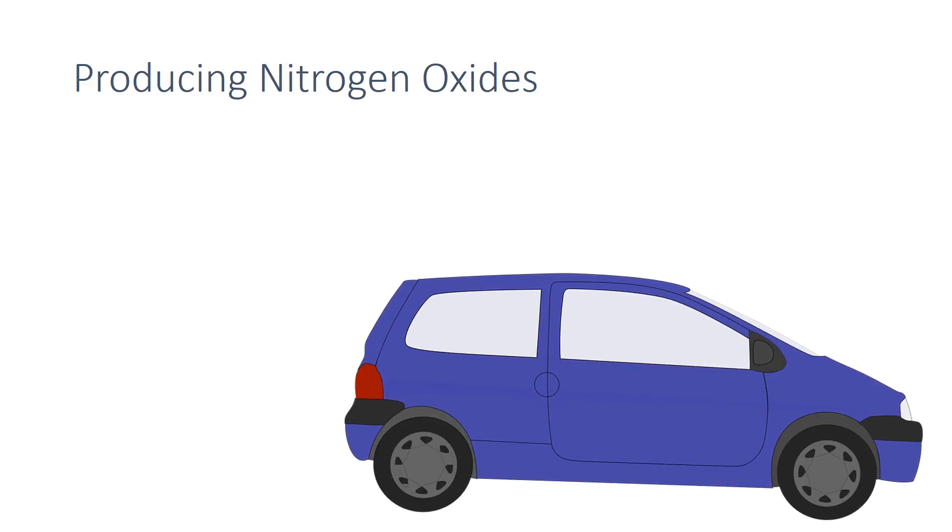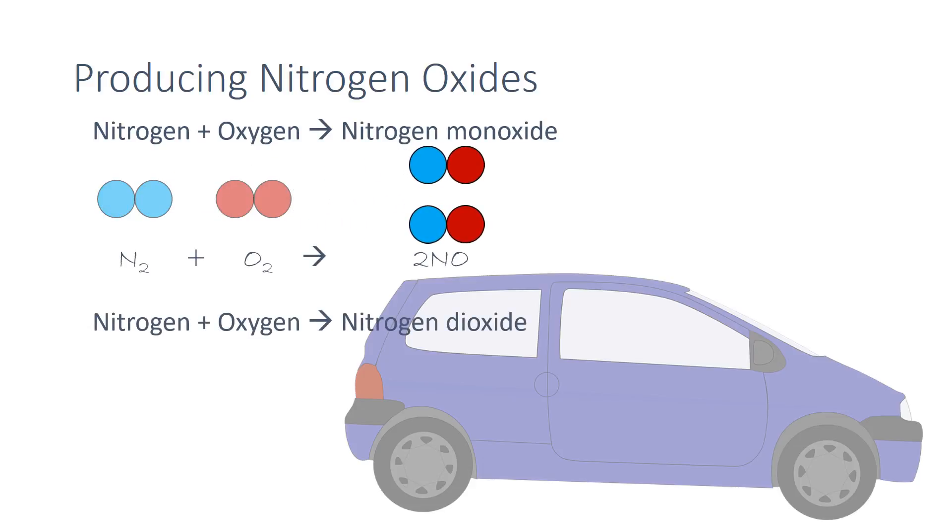As combustion usually occurs with the addition of air to provide the required oxygen, the high temperatures can also cause the normally unreactive nitrogen in the air to react with oxygen. This reaction forms nitrogen oxides such as nitrogen monoxide and nitrogen dioxide.